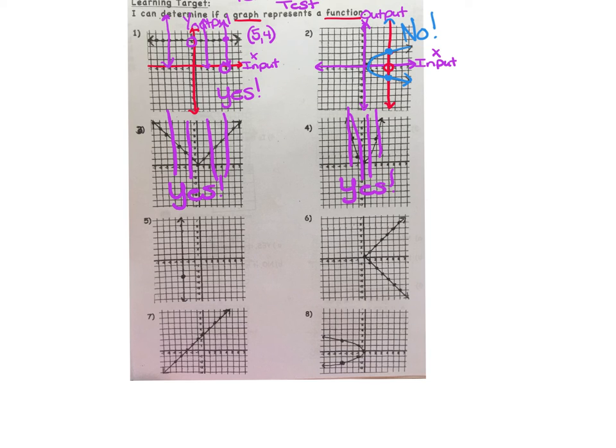However for number 5, if you drop a vertical line it continually strikes the graph and it fails the function test.